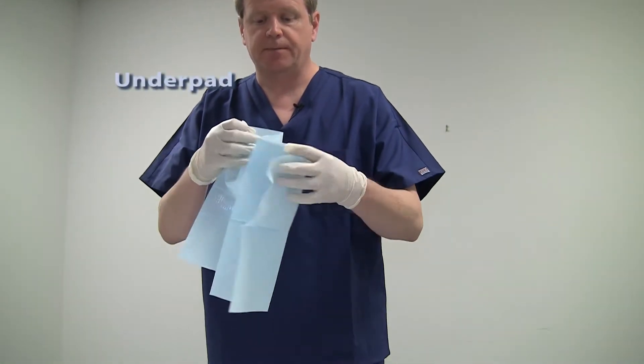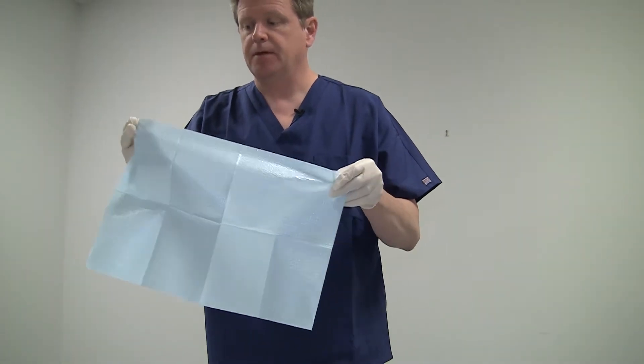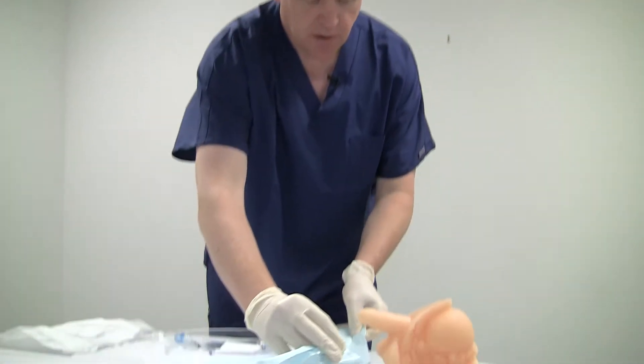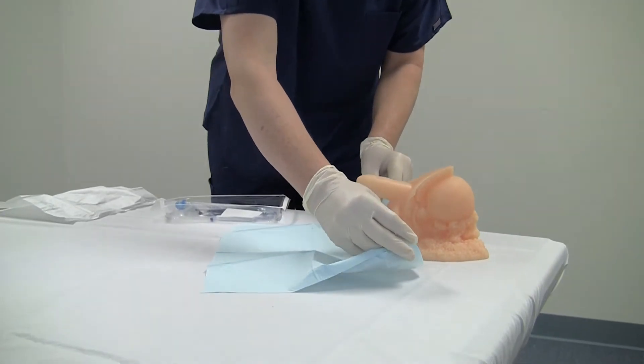After donning gloves, the next kit component we'll find is the underpad. You want to place the underpad shiny side down, paper side up, on the patient's legs with the anatomy above in the middle, just like so.